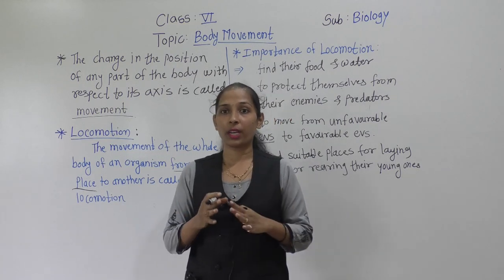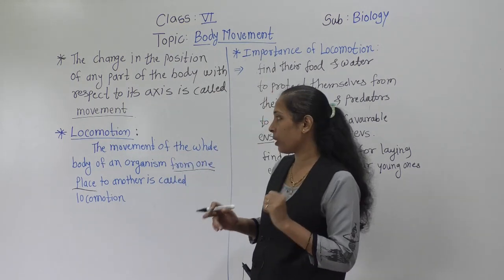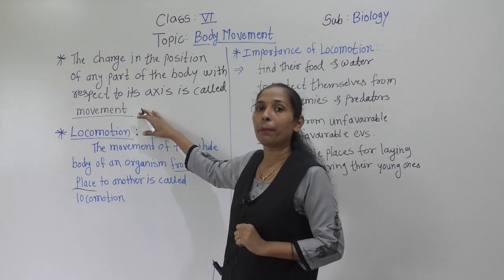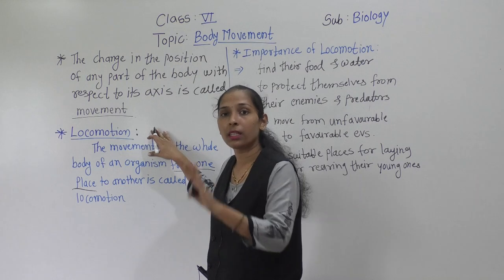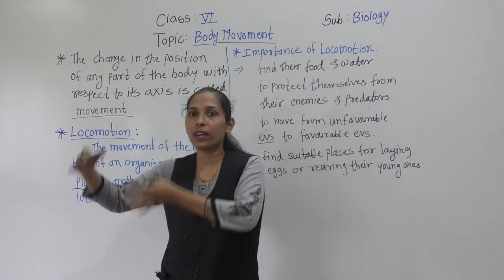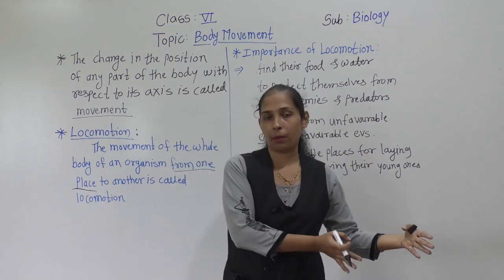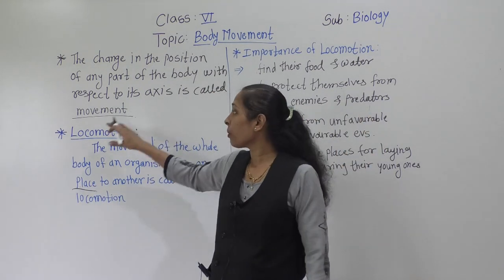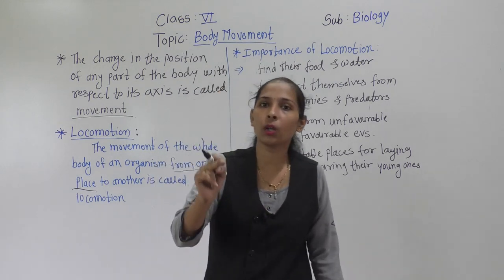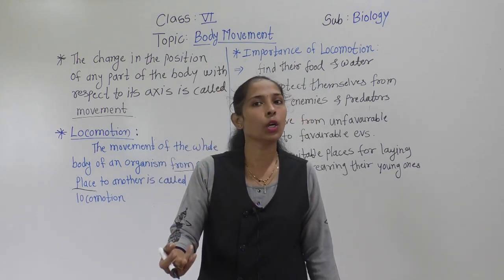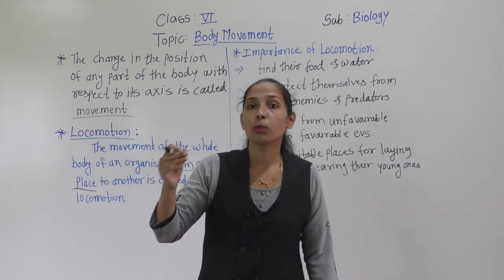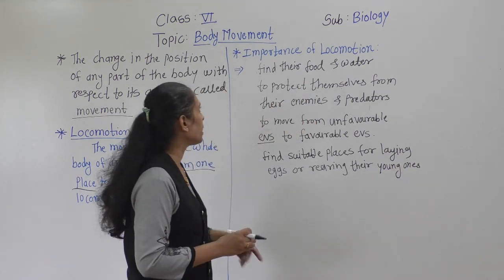It is a very important point that plants show movement but plants do not show locomotion. Plants cannot go from one place to another — they only show movement. Animals and human beings, however, can show locomotion.